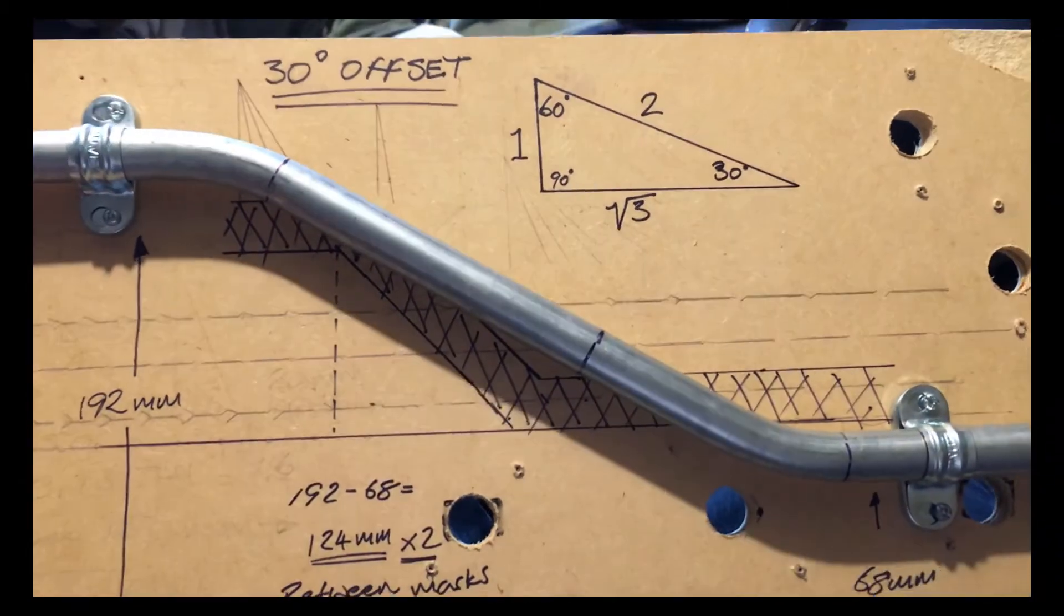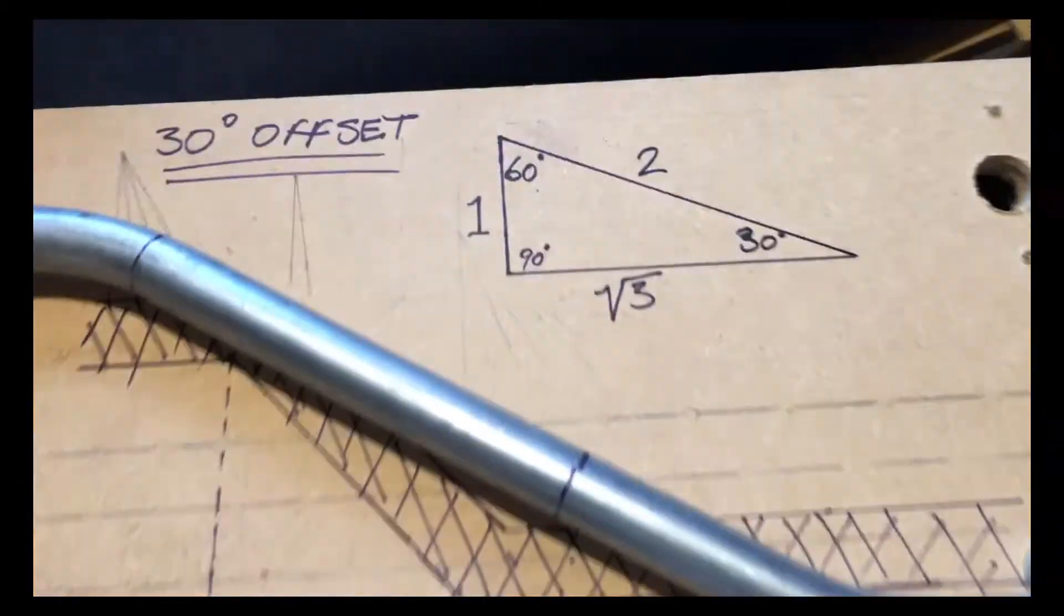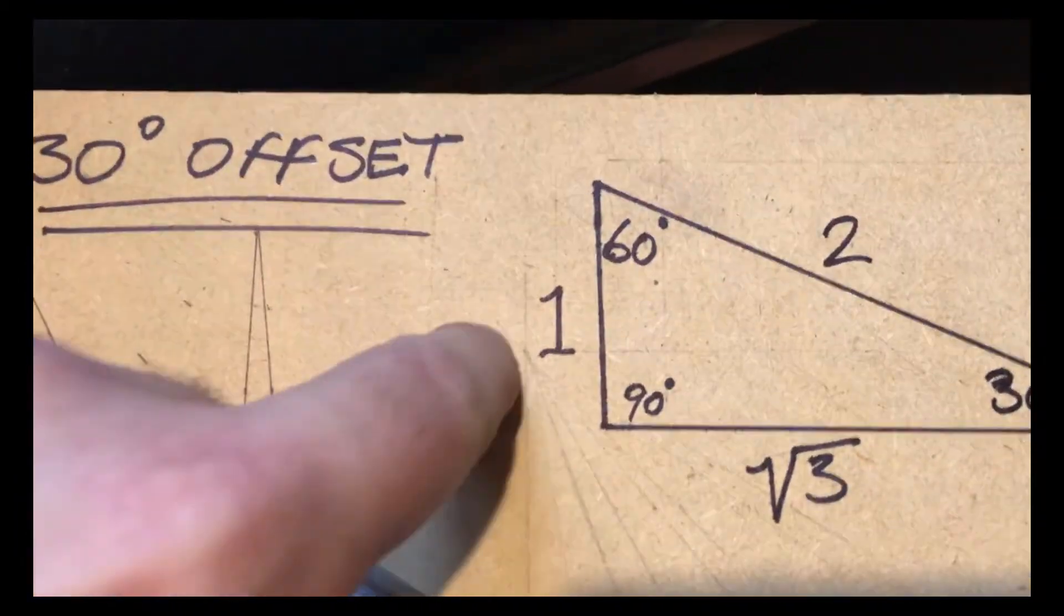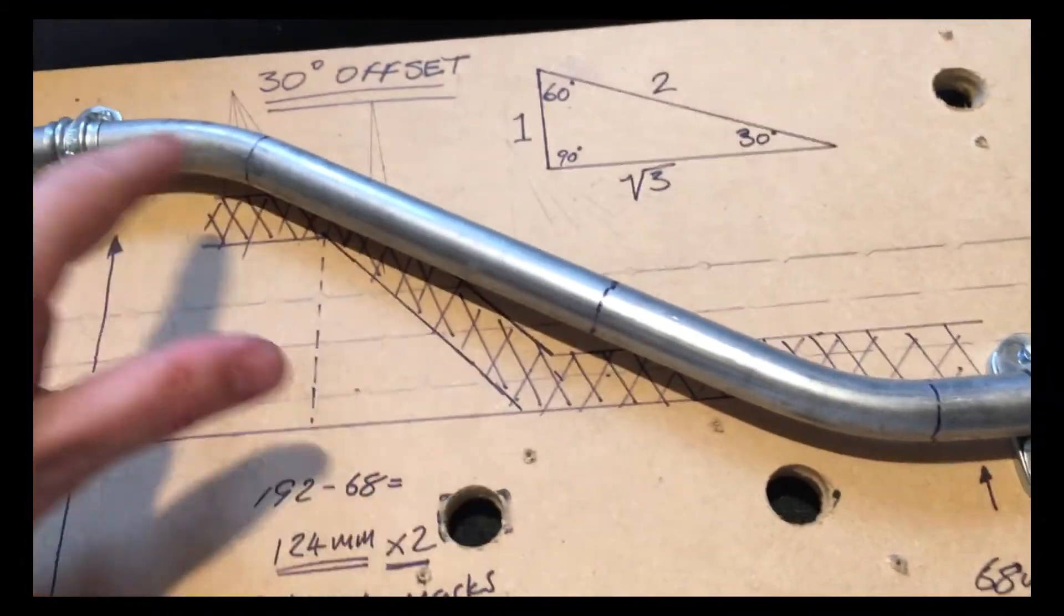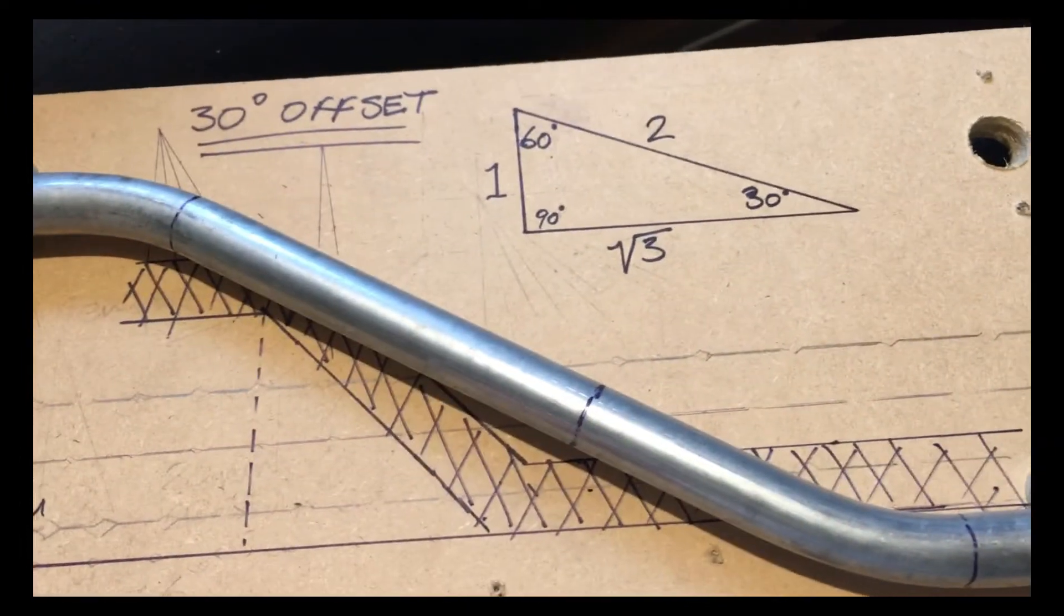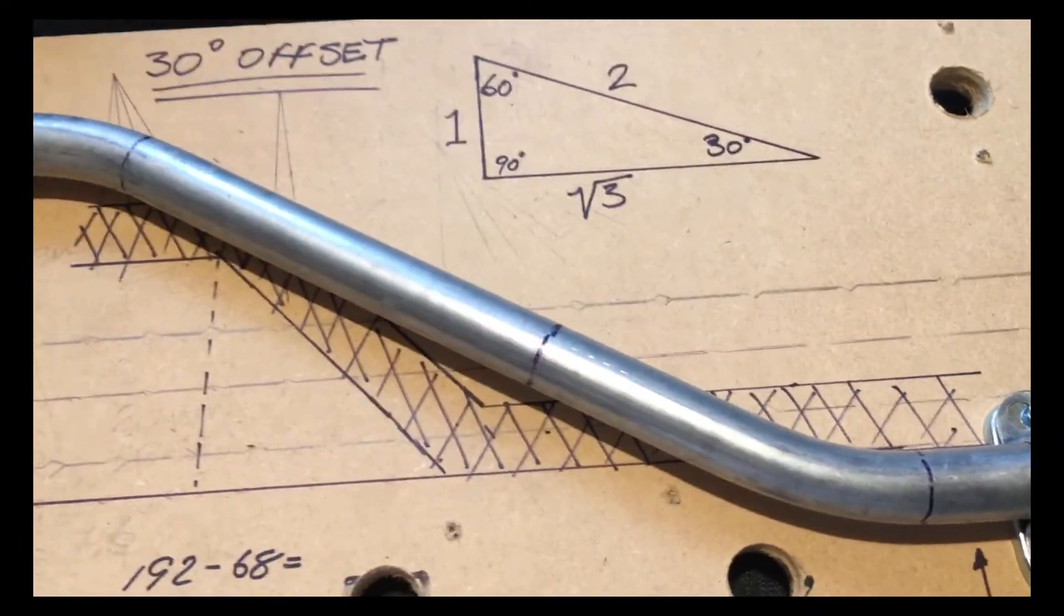Remember, to find this distance that you want to go over, multiply it by two, and that will give you a 30-degree bend.